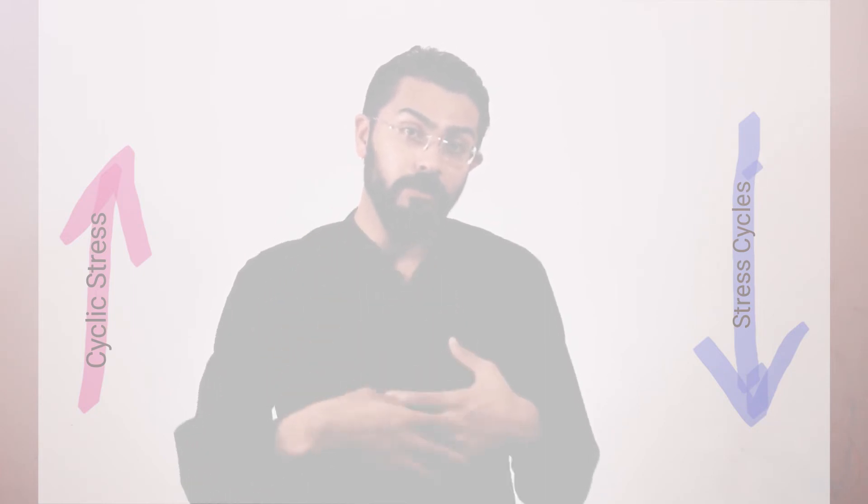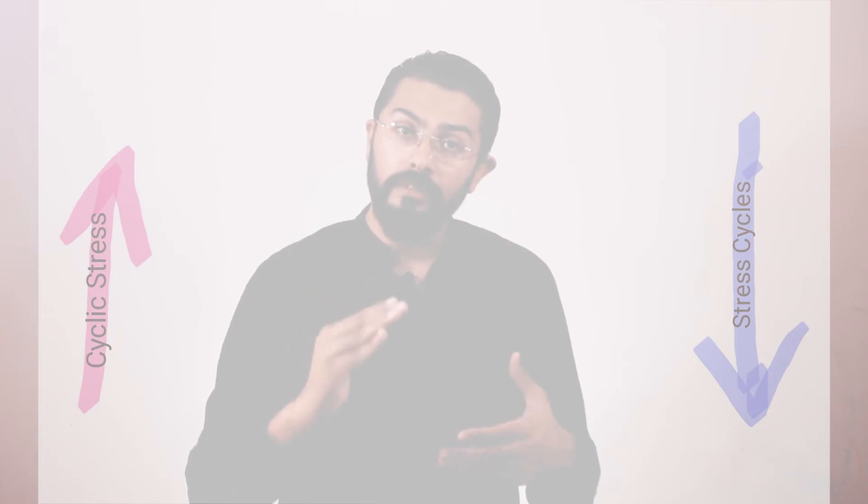Fatigue limit is basically the amount of cyclic stress that a material can bear in an infinite number of stress cycles. The most rigorous approach is to test many specimens at different cyclic stress levels and determine the number of cycles to failure in each case. As the applied cyclic stress is increased — for example, from 2 kilograms to 4 kilograms — the number of stress cycles to failure would decrease. The best way to remember fatigue life and fatigue limit is to focus on the words 'life' and 'limit.'